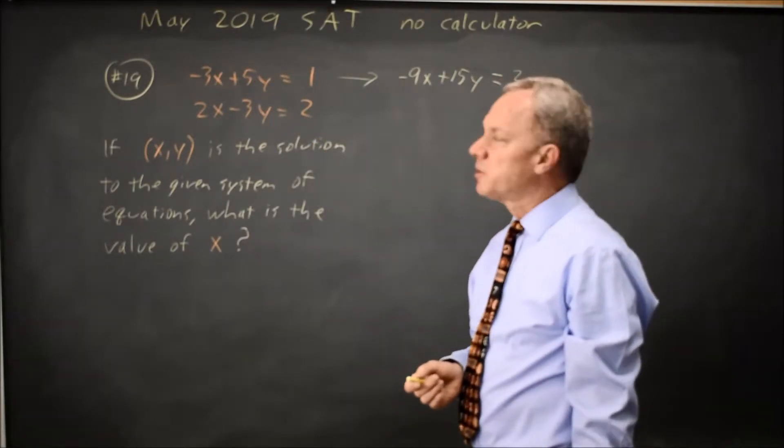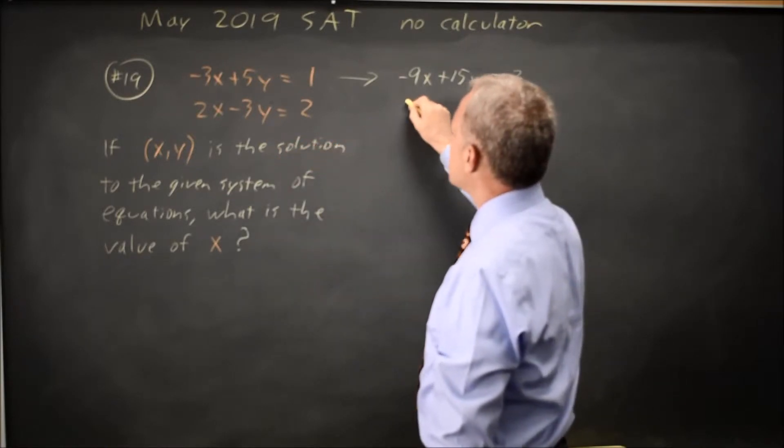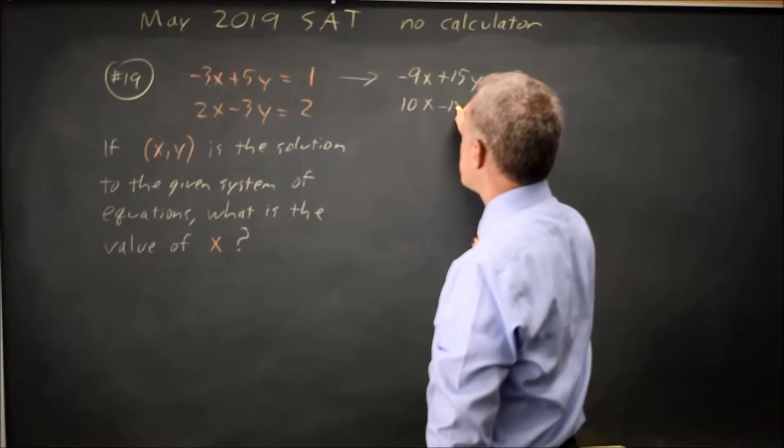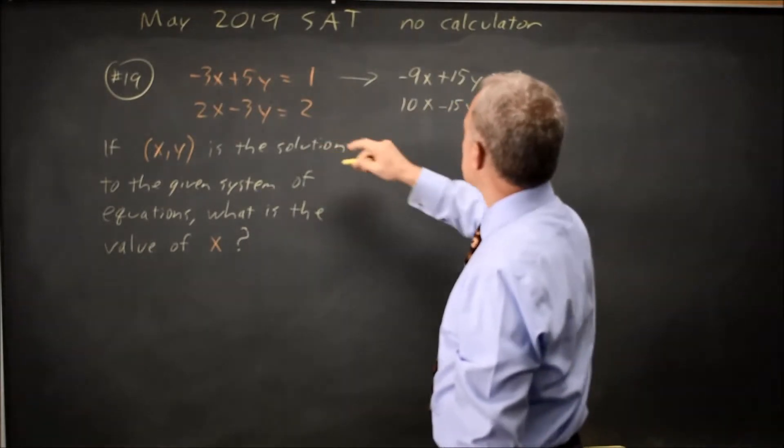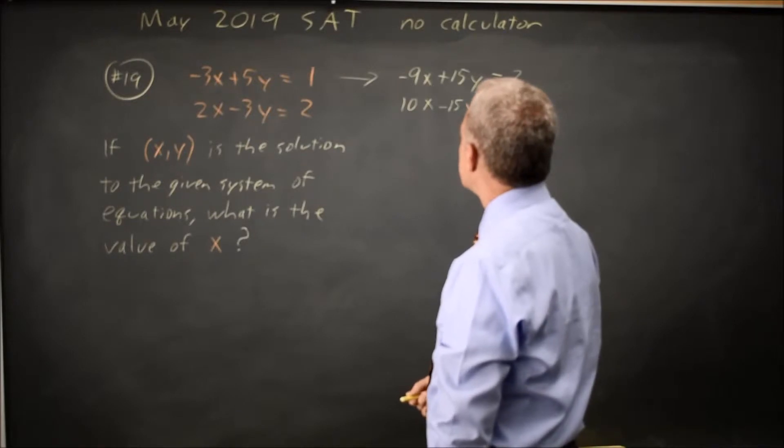Second equation I'm going to multiply through by 10. 2x times 5 is 10x, negative 3y times 5 is negative 15y, 2 times 5 is 10. That worked out better than I expected.